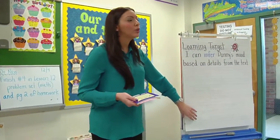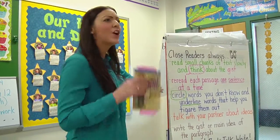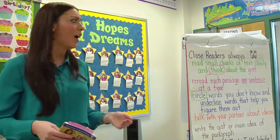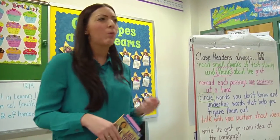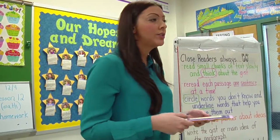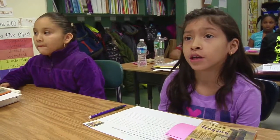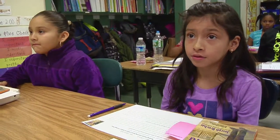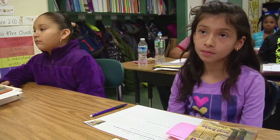Today we're going to use close reading strategies to help us find evidence. Can someone name one thing that we do as close readers? Marilyn, why don't you share? You had to circle words that you don't know and underline. Excellent. So really finding words that maybe you're unsure of and using words around that to guess or figure out what they mean.